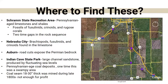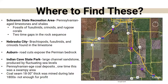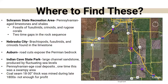Where to find these fossils: SRAM is a great place for crinoid fossils and rugose corals. Nebraska City is good for limestone with brachiopods. Auburn is another good area. Indian Cave State Park is fantastic for seeing different types of animals and substrates — large channels of sandstone from fluctuating sea levels, evidence that the area was once very swampy. There's a coal seam 18 to 30 inches thick in places, and in the late 1800s there was a small mining industry there.